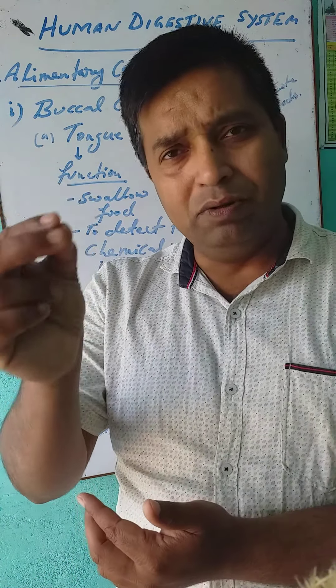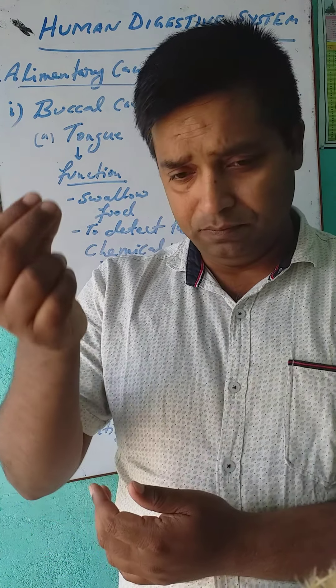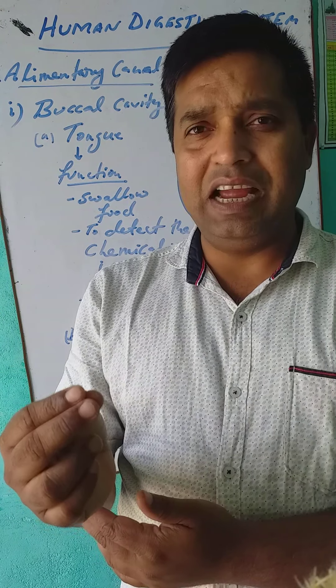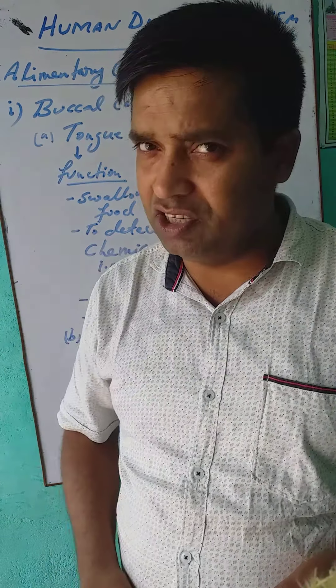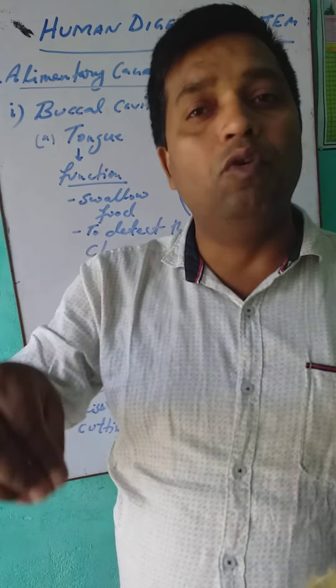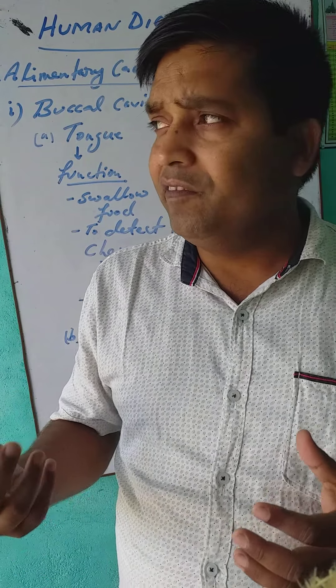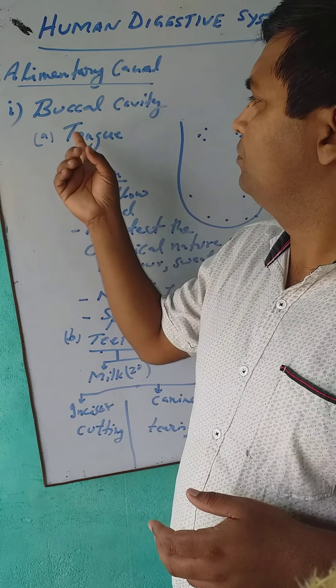The alimentary canal is a tube-like structure that starts from our mouth, that is the buccal cavity, and ends with the anus. It is a tubular structure through which food moves inside. First of all, we have a buccal cavity, which means a space in our mouth that is called the buccal cavity.